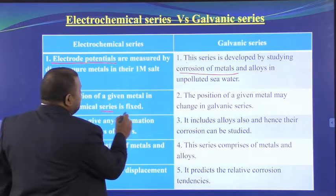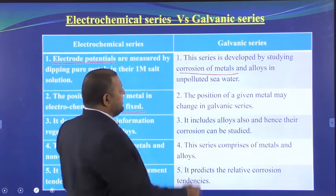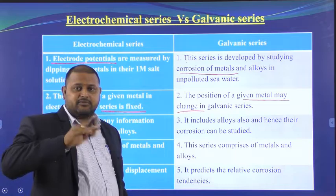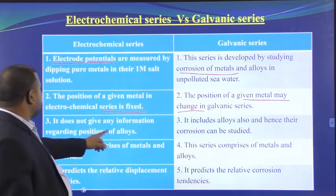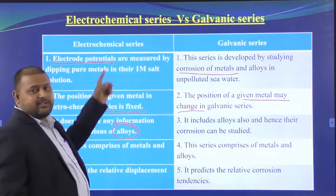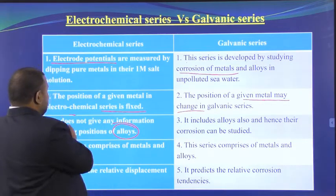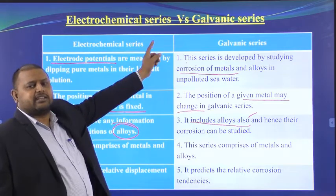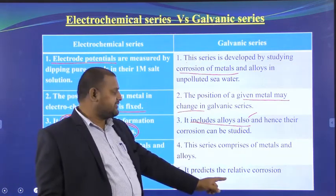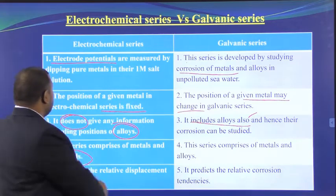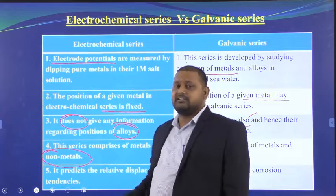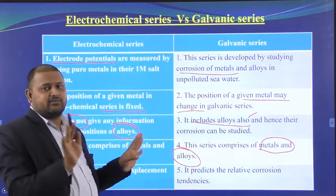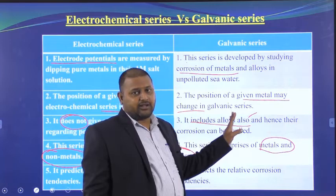In the electrochemical series, the position of a metal is fixed. But in the galvanic series, the position of a metal may change depending upon the environment. The electrochemical series does not give information about alloys, but the galvanic series includes alloys. Also, the electrochemical series includes non-metals, whereas the galvanic series comprises only metals and alloys.